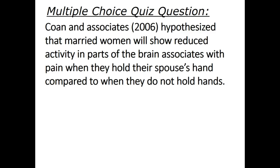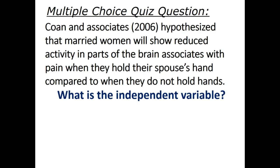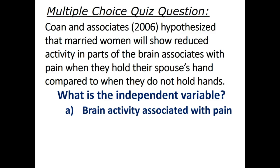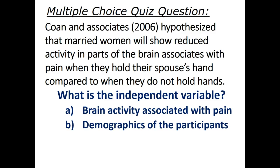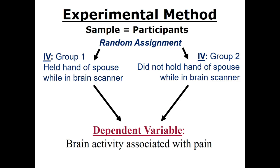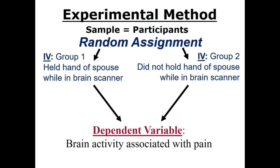Cohen and associates hypothesized that married women will show reduced activity in parts of the brain associated with pain when they hold their spouse's hand compared to when they do not hold hands. What is the independent variable? Is it a) brain activity associated with pain, b) demographics of the participants, or c) hand-holding? The independent variable is hand-holding. The women were randomly assigned to either hold their spouse's hand or not while in the brain scanner. Then researchers compared activity levels in brain areas associated with pain. So the independent variable is the hand-holding condition, and the dependent variable is the measurement of brain activity.